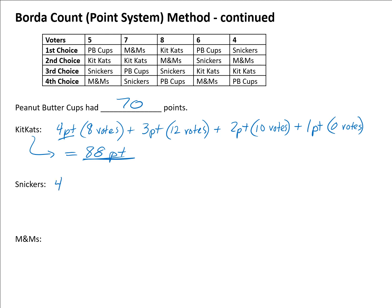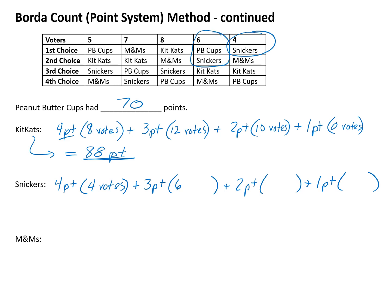For Snickers, setting up four points, three points, two points, and one point: four people voted for Snickers first, six people in second choice, eight plus five giving thirteen people in third choice, and seven people in fourth choice. Calculating: four times four plus three times six plus two times thirteen plus one times seven gives 67 points for Snickers.